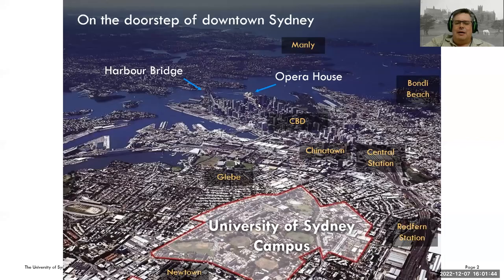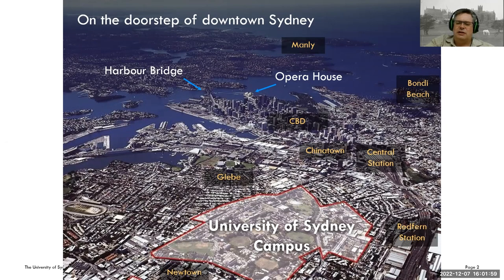I assume most of you on today's webinar are from Sydney or the state of New South Wales. If you've been to the University of Sydney, you'll know roughly where the site is. If you haven't, we're near Redfern Station, Central Station, and Glebe and Newtown at this end. The engineering precinct is down in this area here.